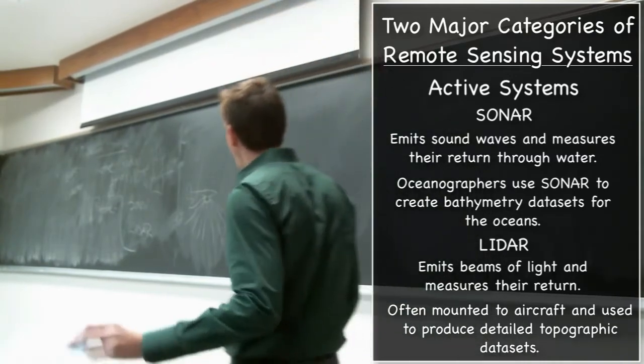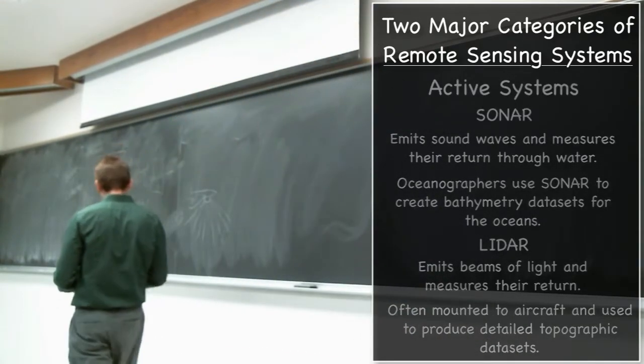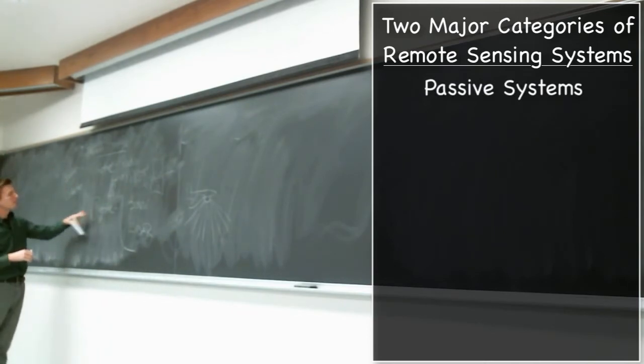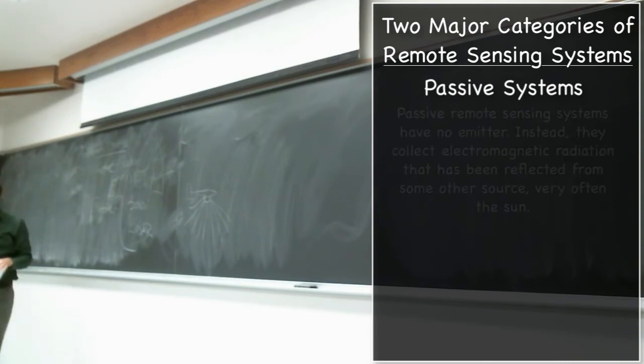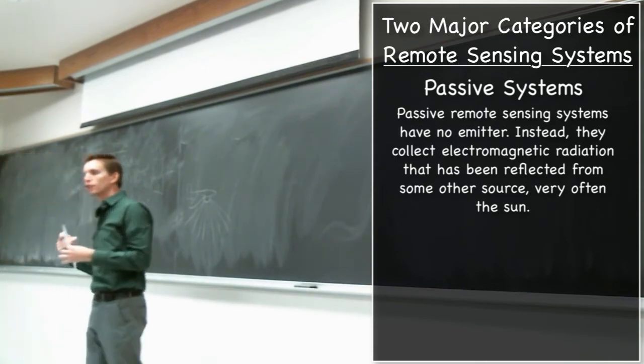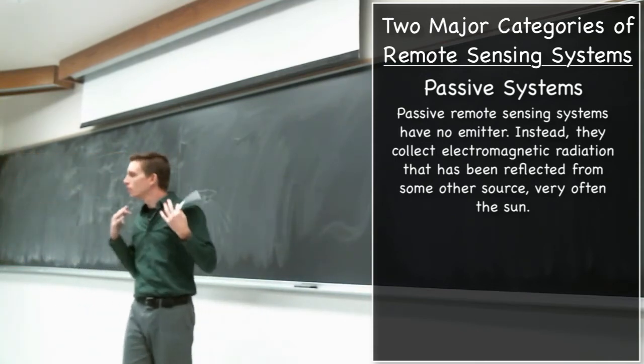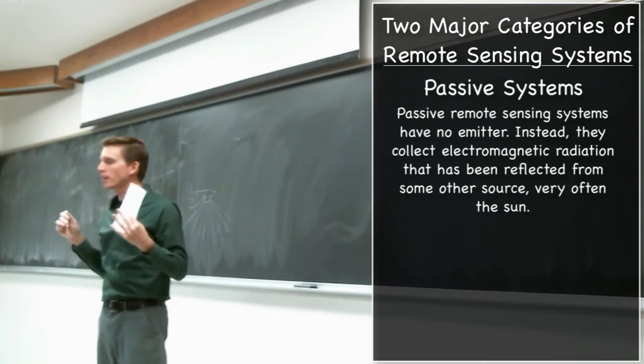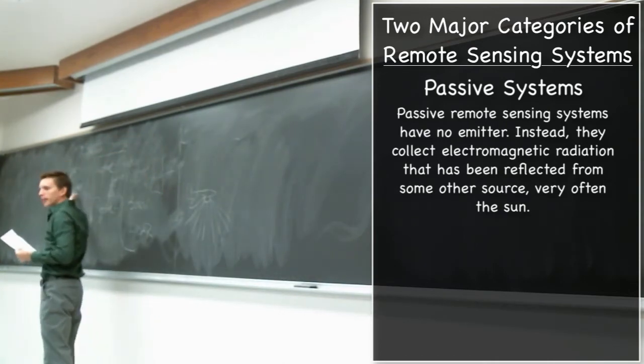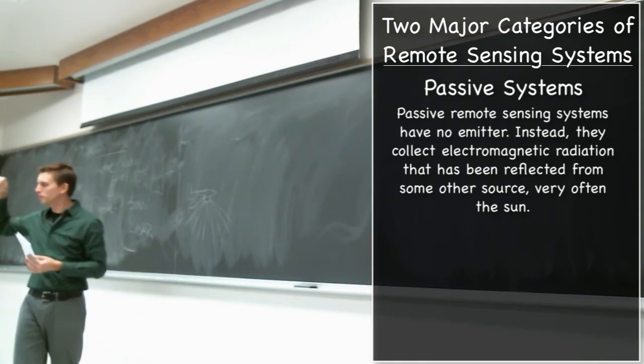But these contrast with the passive remote sensing systems. And basically the difference between a passive and an active system is that a passive system doesn't have any emitter. It doesn't emit whatever it is it's measuring the return of. It's relying on whatever else is out there already in the environment. And basically it's just listening with its collector for whatever comes back.